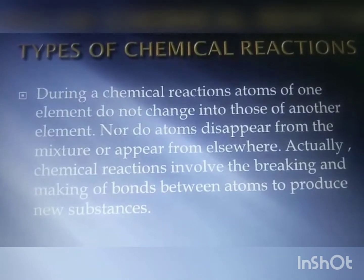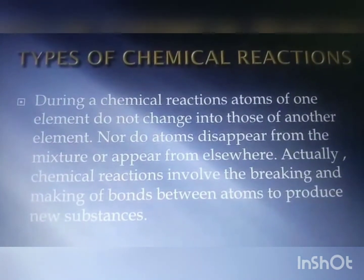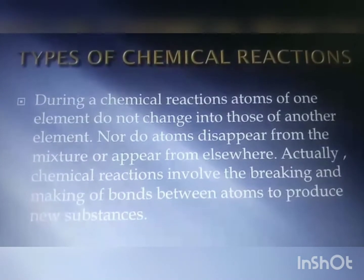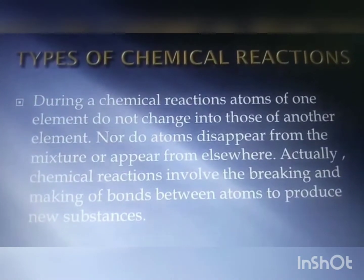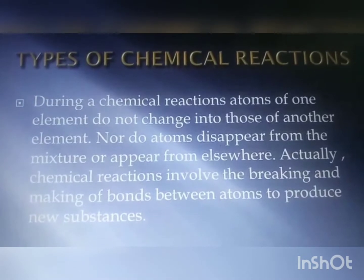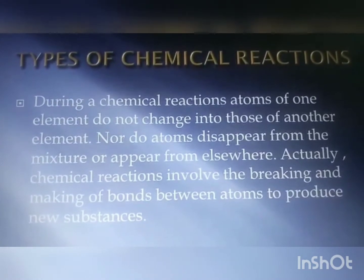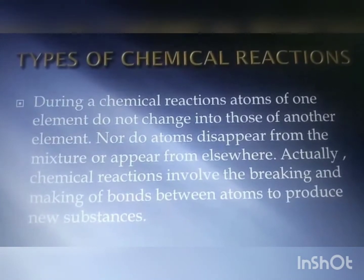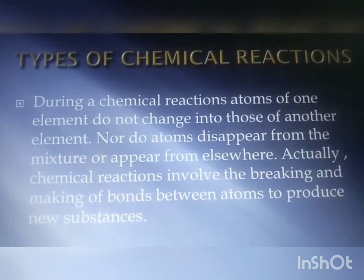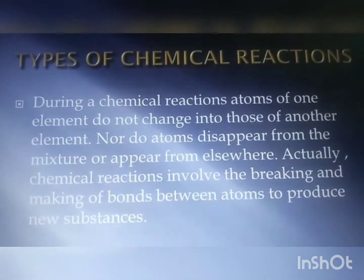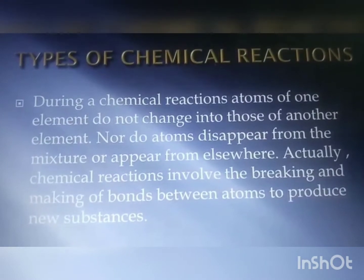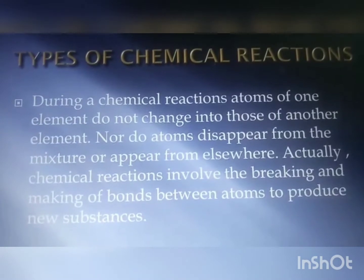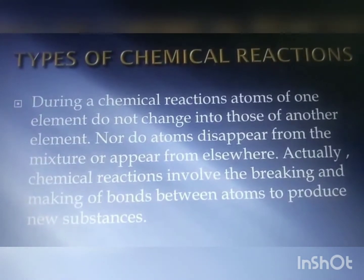We had already discussed that mass can neither be created nor destroyed in any chemical reaction. So the total mass of the elements present in the products of a chemical reaction has to be equal to the total mass of the elements present in the reactants. In other words, the number of atoms of each element remains the same before and after a chemical reaction.